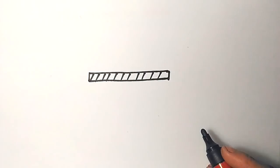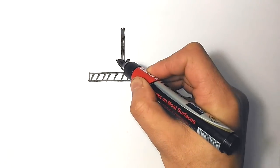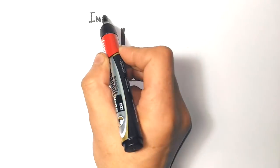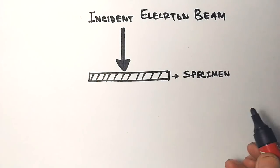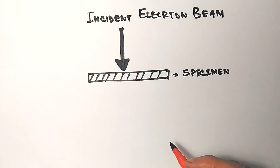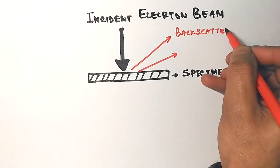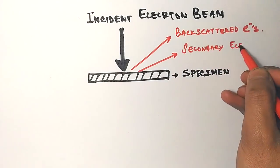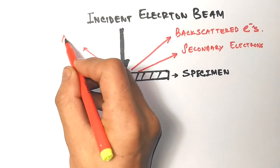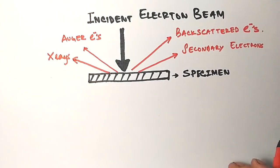We draw here the specimen, the object to be observed, and the incident electrons that are going to be bombarded onto it. When the electrons interact with the specimen...